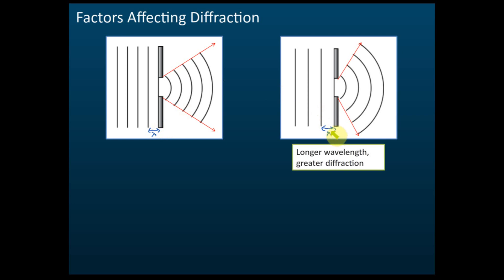The second wave is spread to a wider area compared to the first. The angle of diffraction is bigger for the second wave compared to wave one.